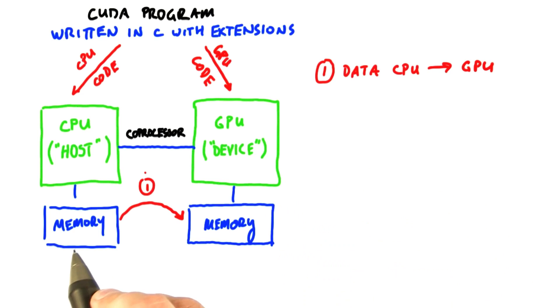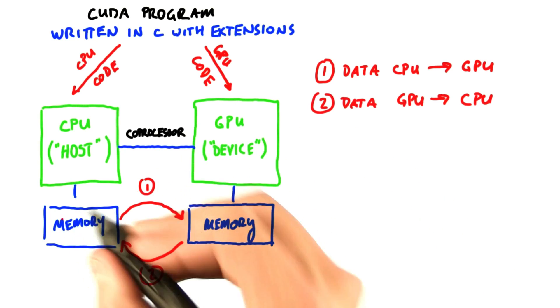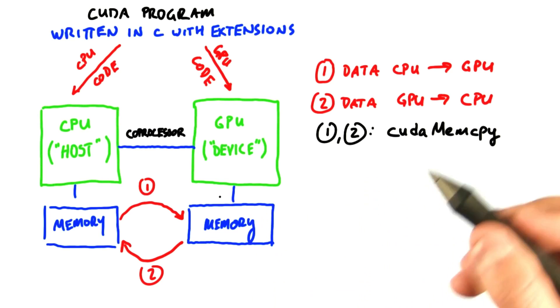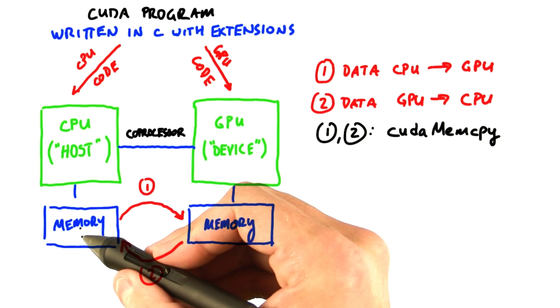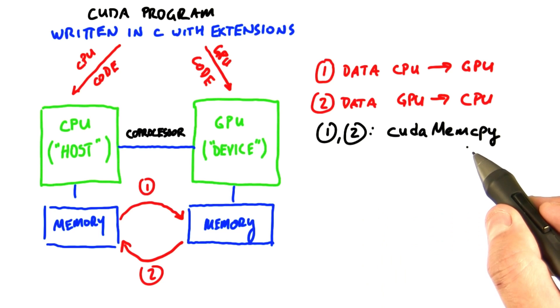One, moving data from the CPU's memory to the GPU's memory. Two, moving data from the GPU back to the CPU. In the C programming language, moving data from one place to another is called memcopy. So it makes sense that in CUDA, this command—either moving data from the CPU to the GPU or from the GPU to the CPU—is called CUDA memcopy.